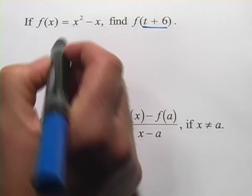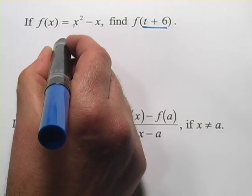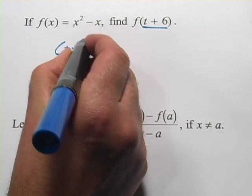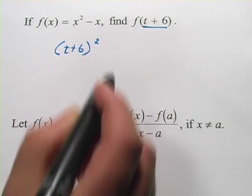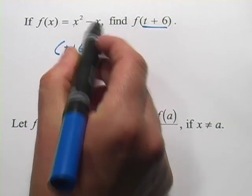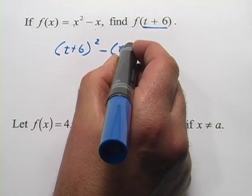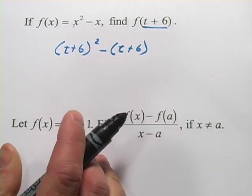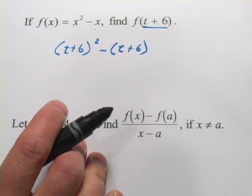So, it's going to sub in for this x here, which means you start with t plus 6 squared, and then here, minus t plus 6. And here, we probably should do some simplifying.